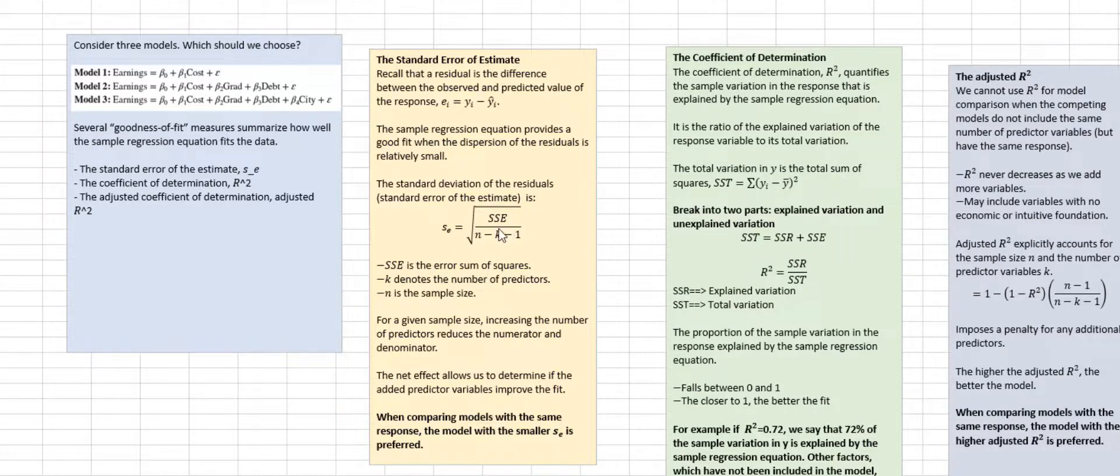The standard deviation of the residuals is calculated with the following formula: the square root of SSE divided by n minus k minus 1. SSE is the error sum of squares. So you take the errors for each observation, square them, and then sum them up. K denotes the number of predictors and n is the sample size. For a given sample size, increasing the number of predictors reduces the numerator and denominator. So the net effects allow us to determine if the added predictor variables improve the fit. When we compare models with the same response, which in this case is earnings, the model with the smaller SE is preferred.